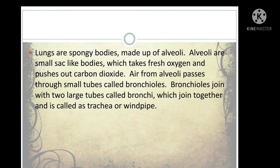Now let us see what lungs are. Lungs are spongy bodies made up of alveoli. The alveoli are small sac-like bodies which take in fresh oxygen and push out carbon dioxide. Air from alveoli passes through small tubes called bronchioles. Bronchioles join with two large tubes called bronchi, which join together and form the trachea or windpipe. It is from the windpipe that air is either taken in or taken out through the nose or the mouth.